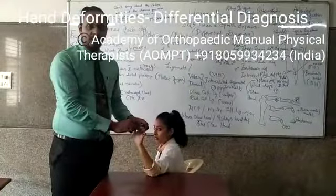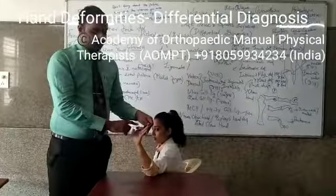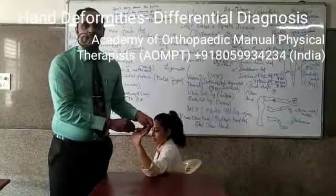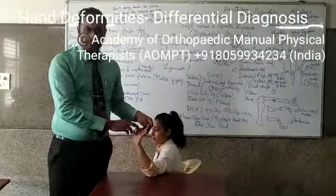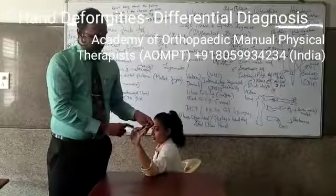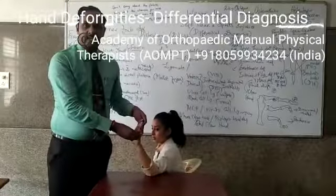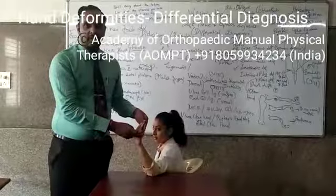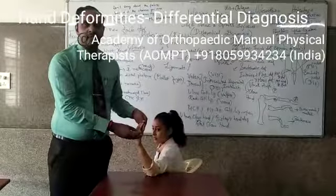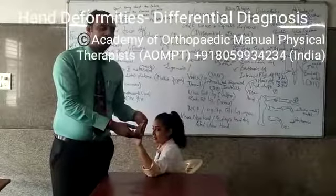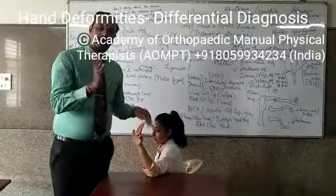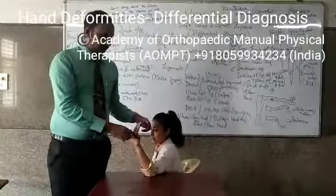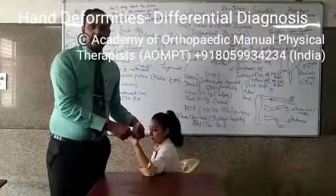Only if the radial fingers are going into clawing and the lateral ones are normal, it is called the median claw hand, because median nerve injury leads to only the lateral lumbricals going for atrophy. If it is ulnar nerve injury and the median nerve is intact, only the two medial lumbricals will go for atrophy, leading to claw hand only in the little finger and ring finger — extension of the MCP with flexion of the IP joints in those fingers.